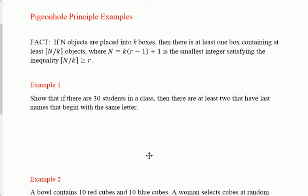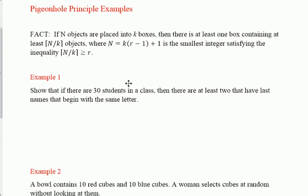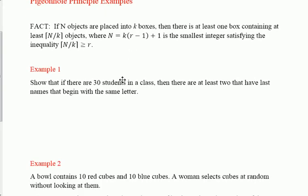Here's an example that's pretty standard. Show that if there are 30 students in a class, then there are at least two that have last names that begin with the same letter. I think about this as lining up the students and questioning each student in the class. My goal is to prove this as quickly as possible using the worst-case scenario method.